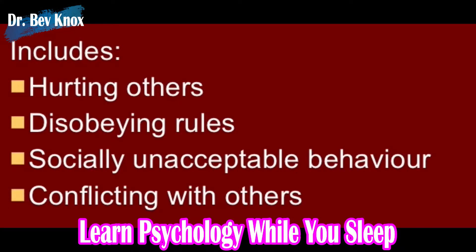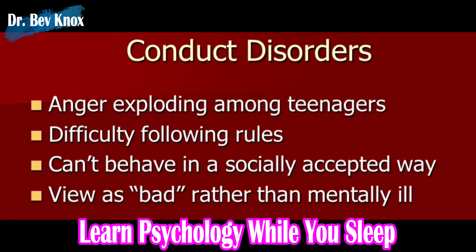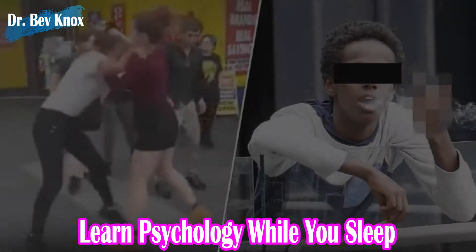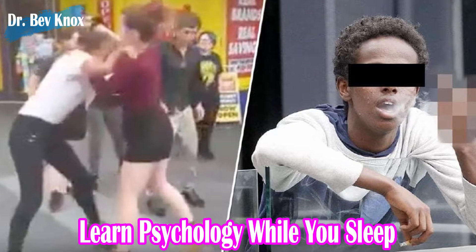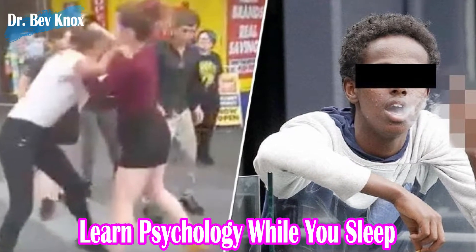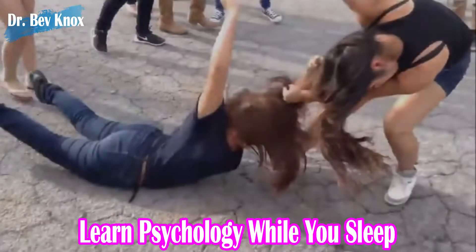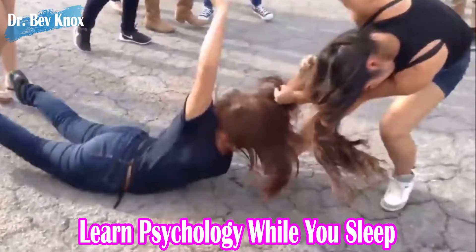Now let us review anti-social behavior. Conduct disorder is a psychiatric diagnostic category used to describe multiple delinquent-type behaviors occurring over a six-month period. Juvenile delinquency consists of a broad range of behaviors, from socially undesirable behavior to status offenses. For legal purposes, a distinction is made between index and status offenses.